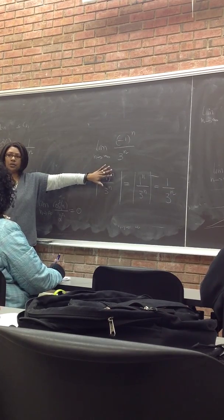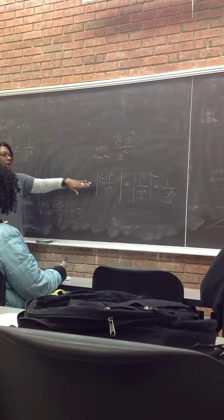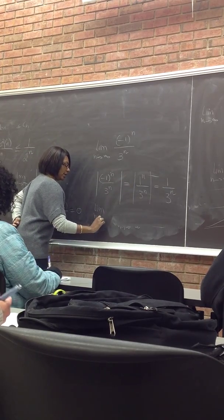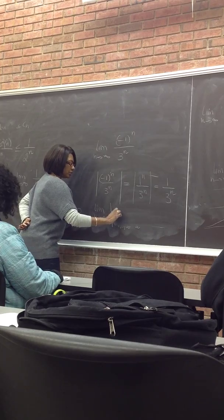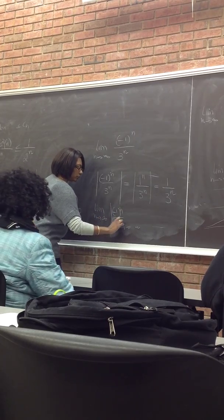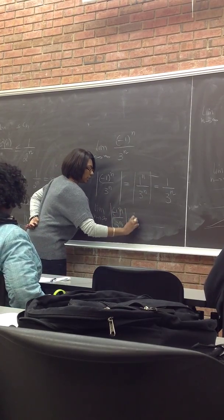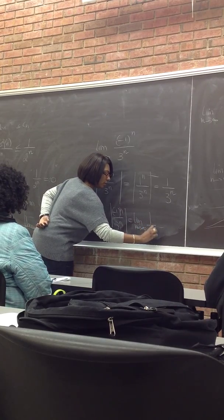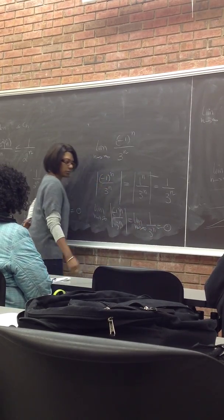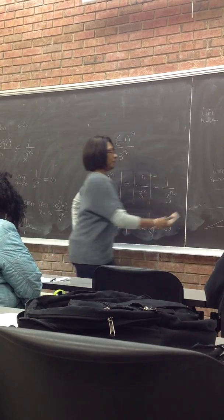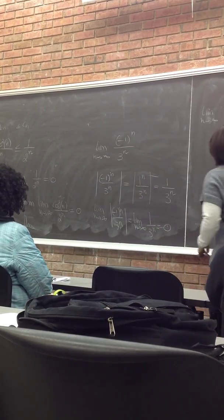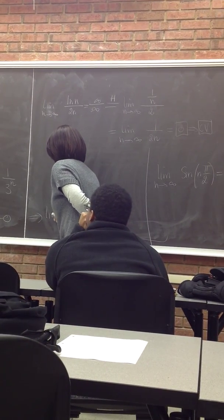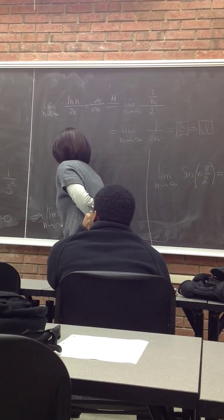We try to eliminate that problem by taking the absolute value. Then, what is the limit of this? The limit as n goes to infinity of one over three to the n of course goes to zero. Then I can say: if the limit of the absolute value is zero, then the limit of the sequence itself is also zero.